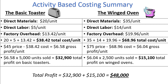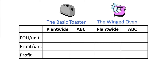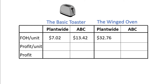Let's do a quick comparison to the results from the plant-wide method. Under the plant-wide rate, the factory overhead per unit was $7.02 for the basic toaster and $32.76 for the winged oven. With activity-based costing, the overhead costs for the basic toaster increased to $13.42 and decreased to $19.96 for the winged oven. We saw a $12.98 profit per unit for the basic toaster under the plant-wide rate, which decreased to $6.58 under ABC. For the winged oven, we had a $6.76 loss per unit under the plant-wide rate, which turned around to a $6.04 profit per unit under ABC. Under the plant-wide rate, a manager may have stopped producing the winged oven, but the activity-based costing analysis shows that the winged oven is actually profitable.